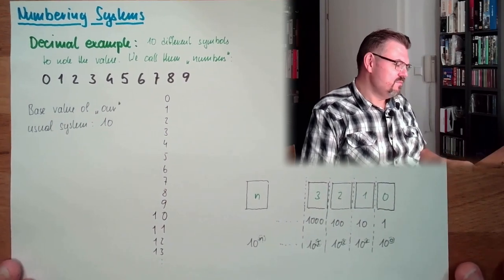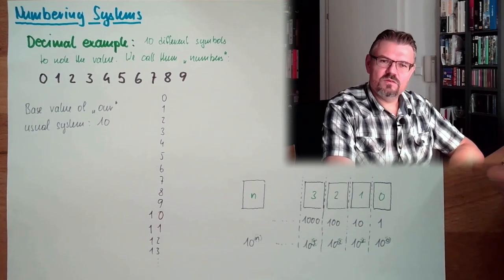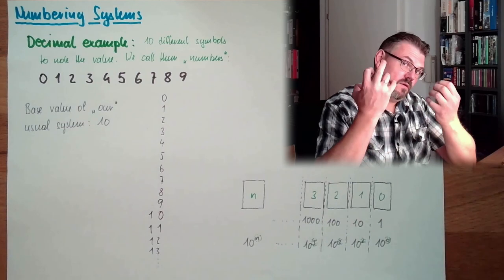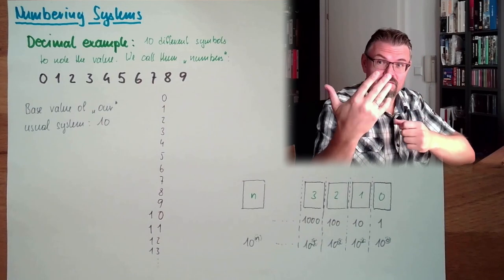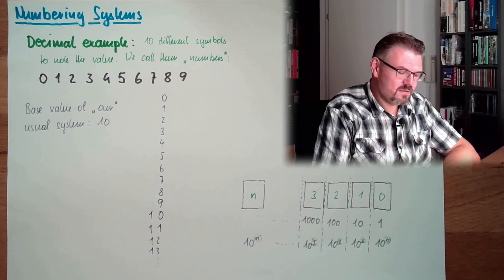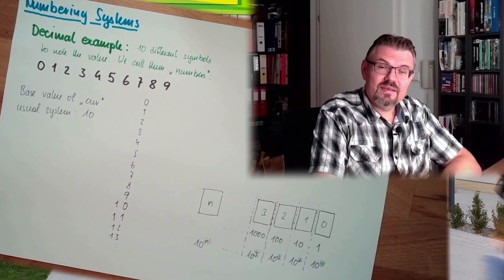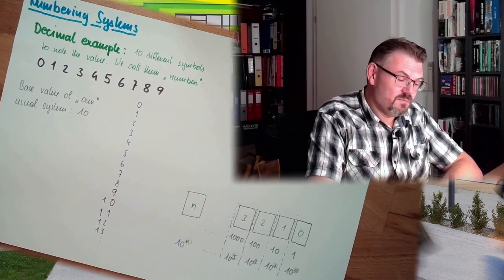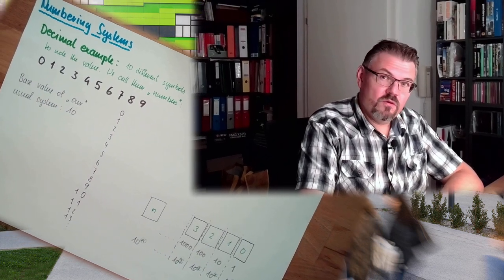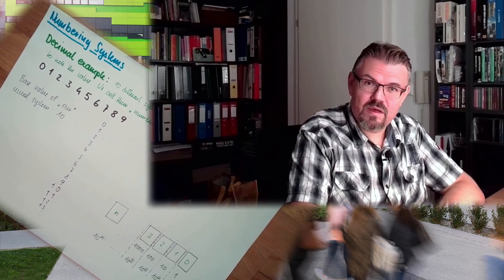This is how a numbering system works. And we are using 10 different symbols. We don't know exactly why. Suspicion is because we have 10 fingers, 10 digitus. Digits, 10 fingers. And the guess is that we are using the decimal system exactly for that reason. But every other base value would also be possible. Every other base value, does not really matter.